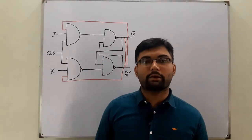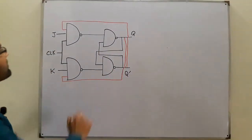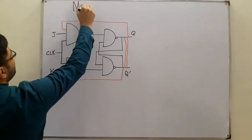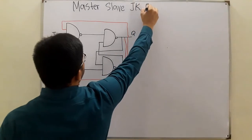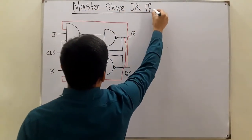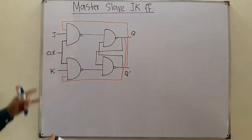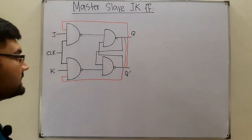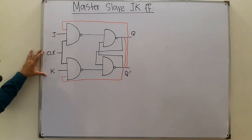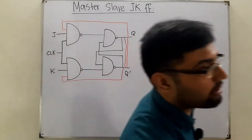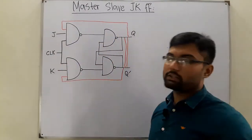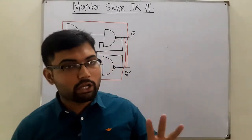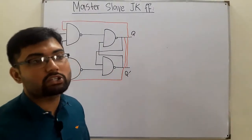Assalamu alaikum. Today we look at the master-slave operation in the JK flip-flop. First, we need to revise what is wrong with the JK flip-flop. The problem is racing — when you give it J=1, K=1 and the clock is one, the output starts to race uncontrolled. We overcome this with the master-slave JK flip-flop.